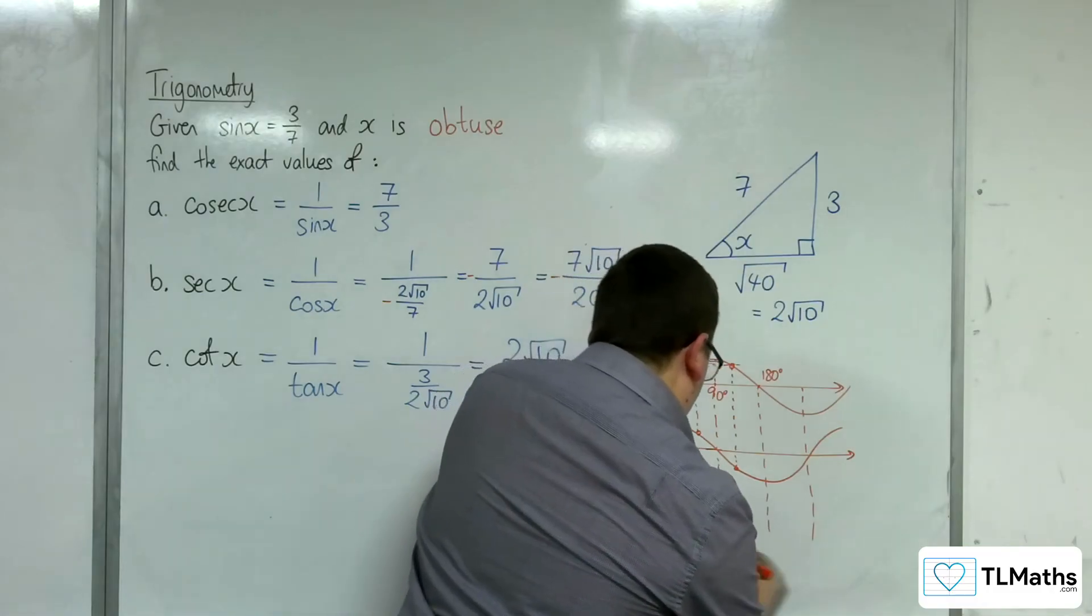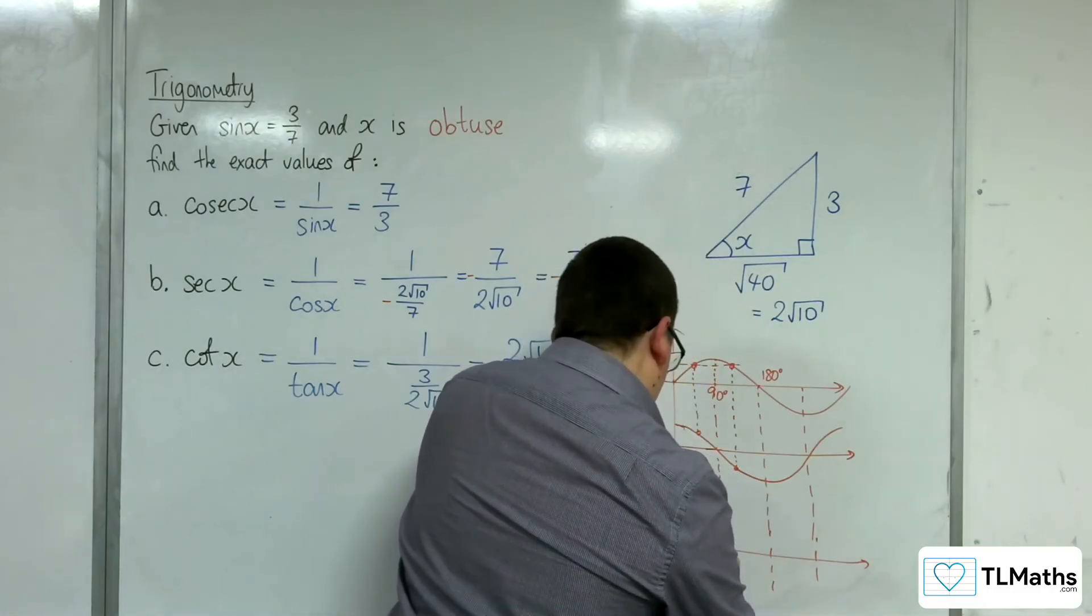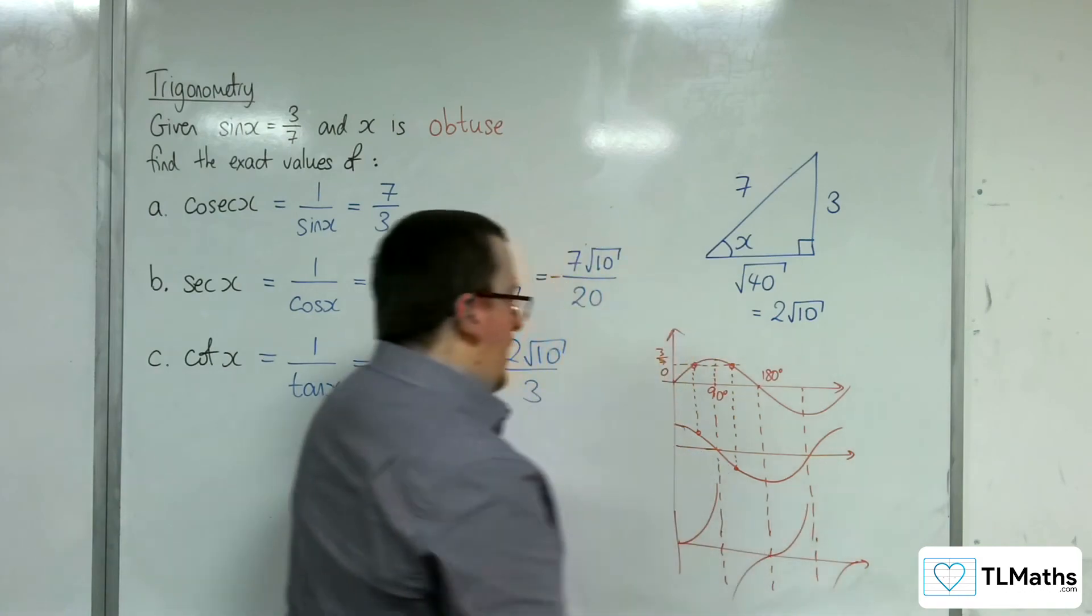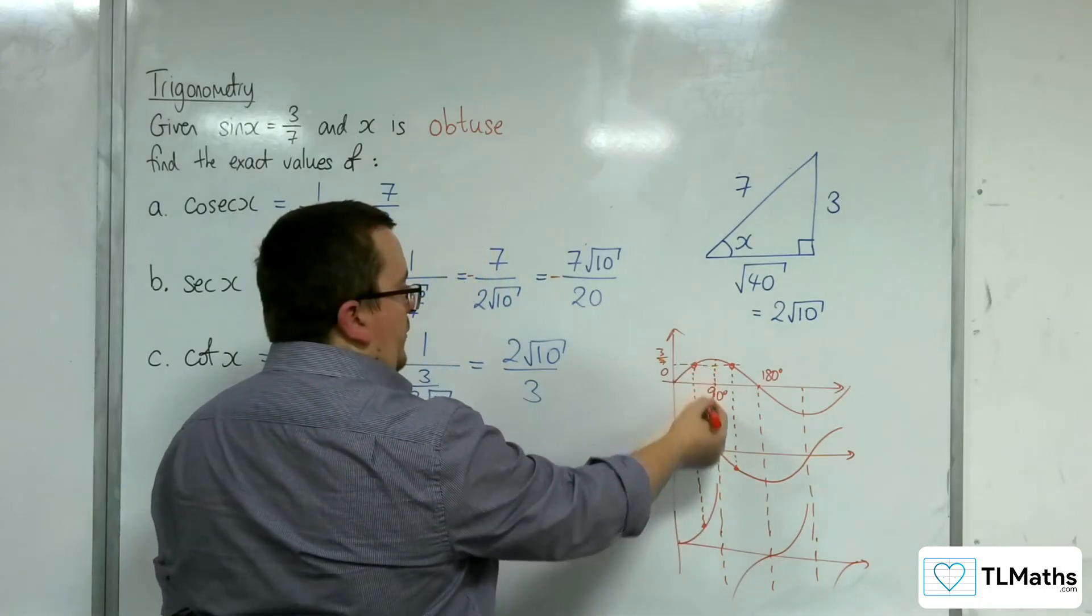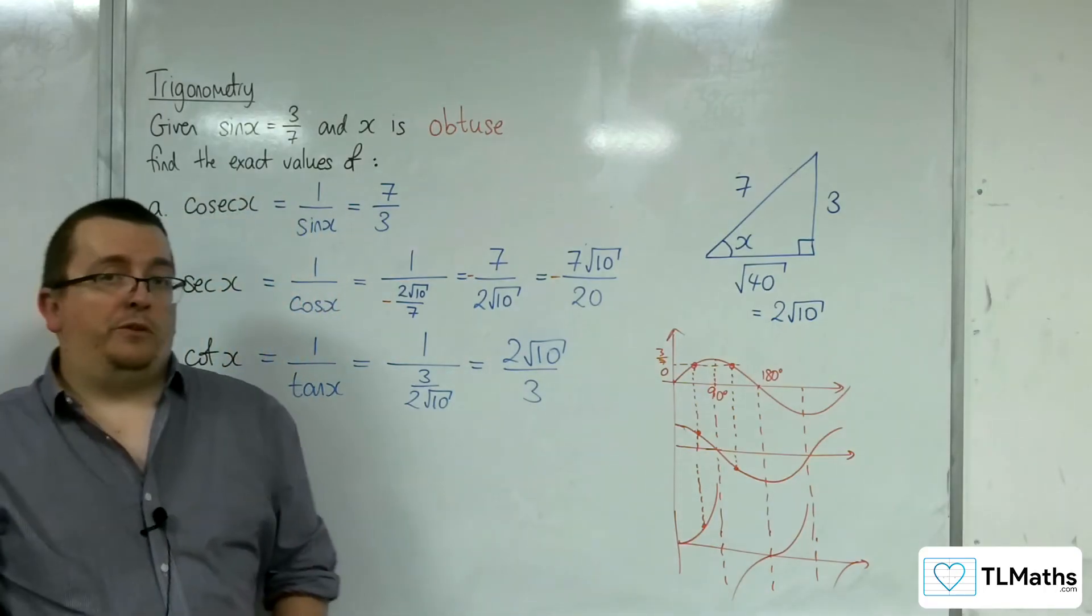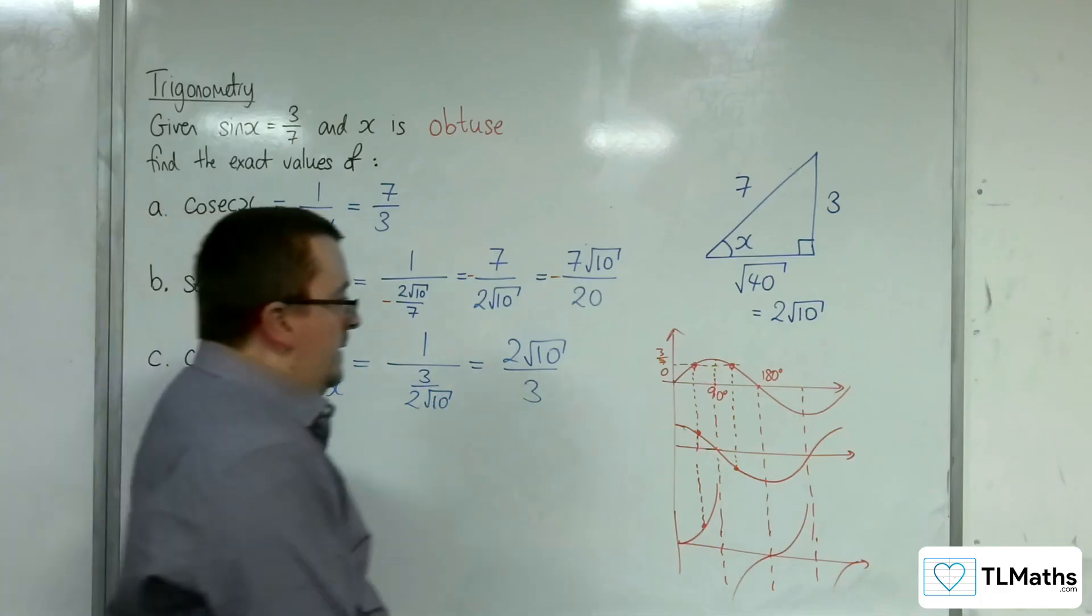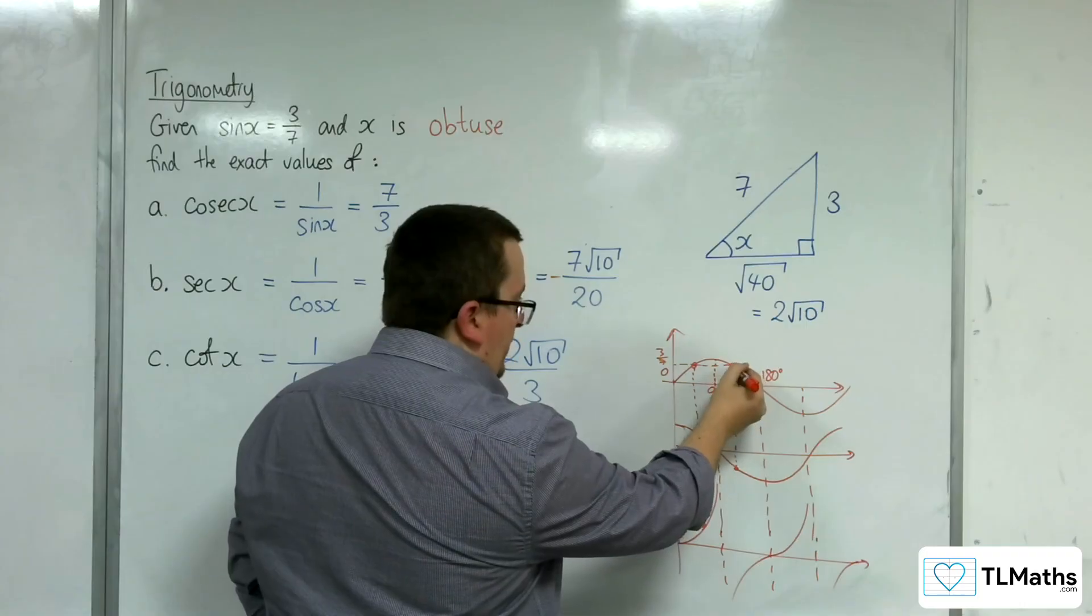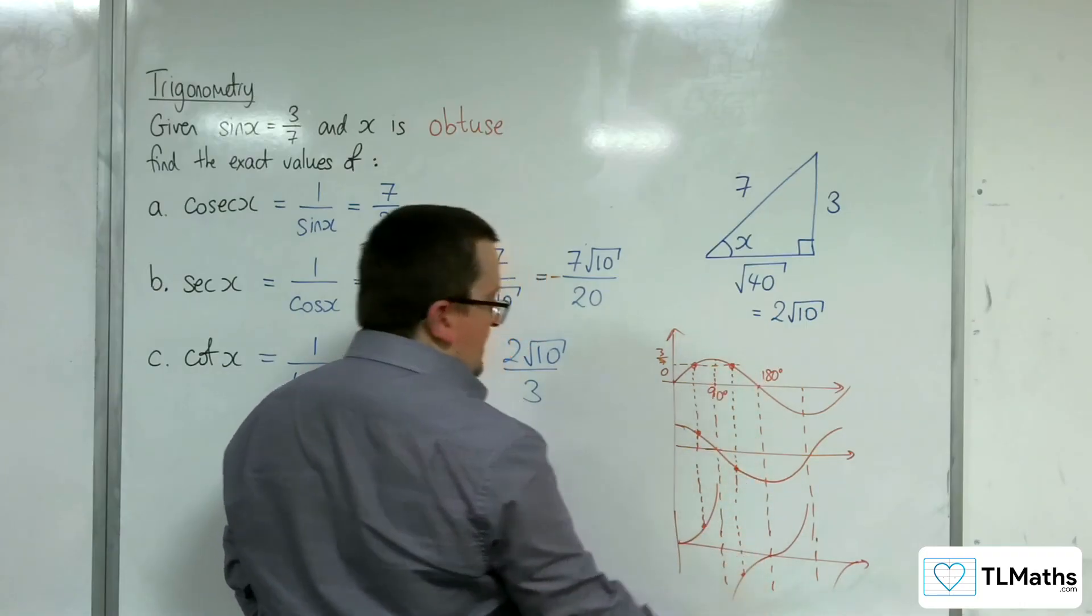As for tan, that first value which was positive for sine and cosine will be positive for tan as well. It makes sense because you've got positive divided by positive, giving 2√10/3. But for the obtuse value, which was positive for sine and negative for cosine, tan will be negative.